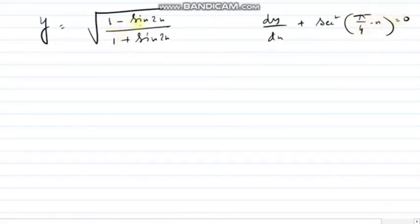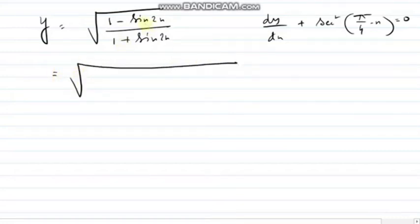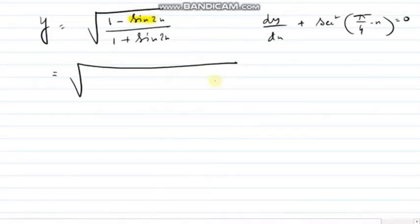Whenever you get any term like (1 minus sine 2x) by (1 plus sine 2x) under root, first don't go for any differentiation — first simplify. So, what is the simplification? Sine 2x: the formula is 2 sine x cos x. And 1 can be written as sine squared x plus cos squared x.